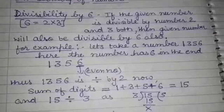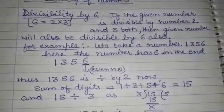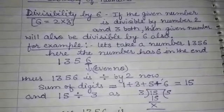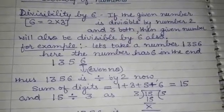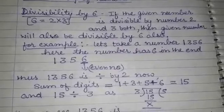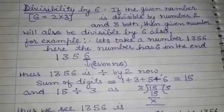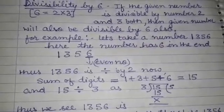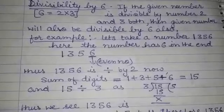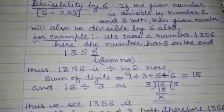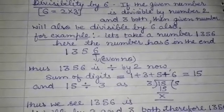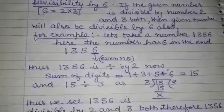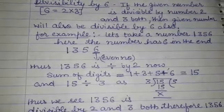Let's take an example. Here we have taken the number 1356, and we want to know whether the given number is divisible by 6 or not. First of all we will see if this given number is divisible by 2. For this we will look at the last digit. Here the last digit is 6 and 6 is an even number. We know the divisibility rule of 2 is if the last digit is even, then it is divisible by 2. So 1356 is divisible by 2.